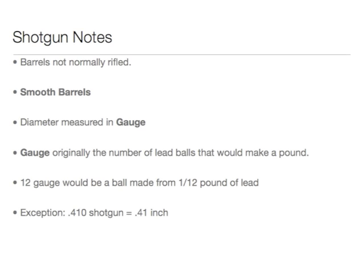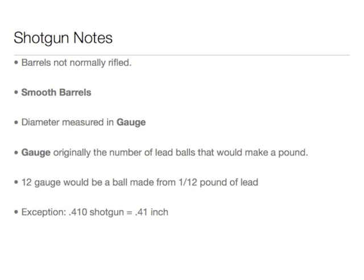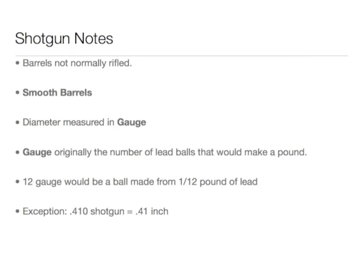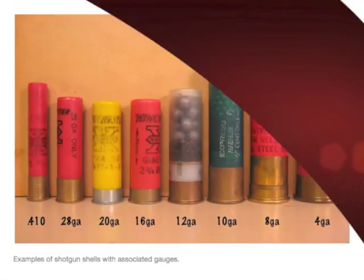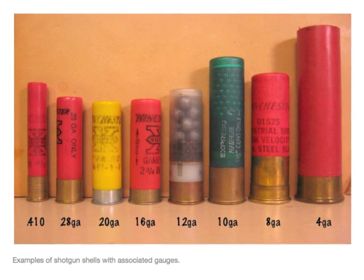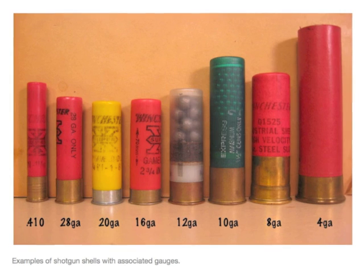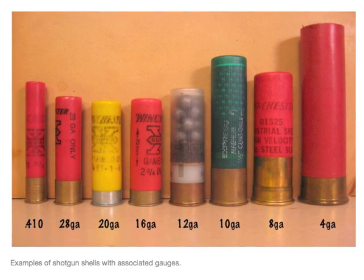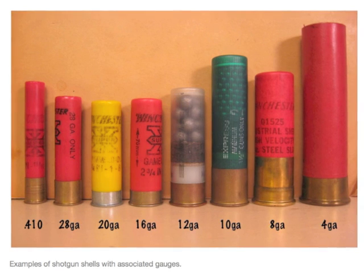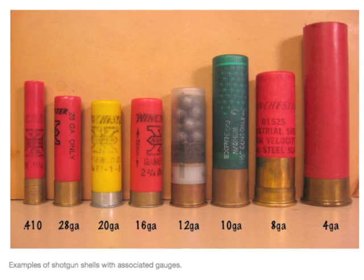Shotguns are different. Their barrels are not normally rifled, although some can be. They have smooth barrels, and their diameter is measured in gauge. Gauge was originally the number of lead balls that would make a pound. So a 12-gauge would be a ball made out of a twelfth of a pound of lead. The exception is the .410 shotgun, which its barrel is .41-inch. Here you can see the different sizes of shotgun shells. If you look to the far right, there's a four-gauge — that means that lead ball is four ounces, or one-quarter of a pound, which is a fairly large barrel when you can make a ball out of a quarter pound of lead.